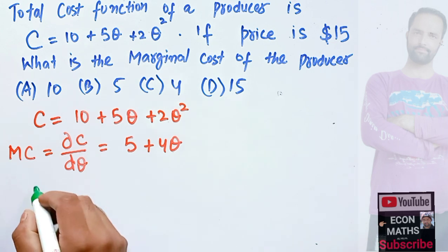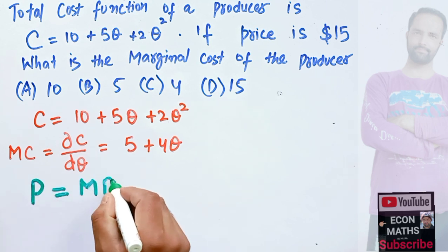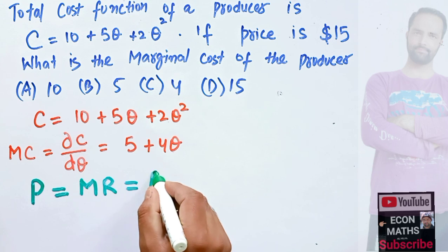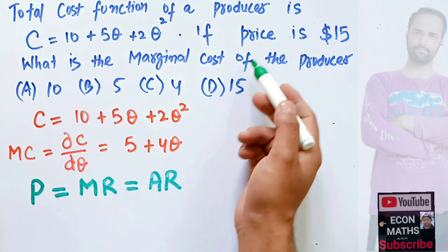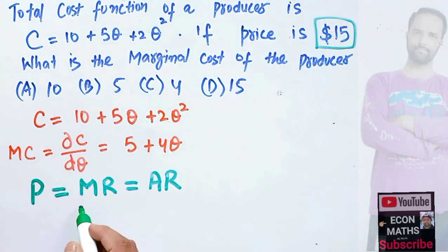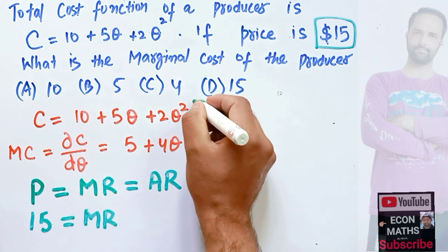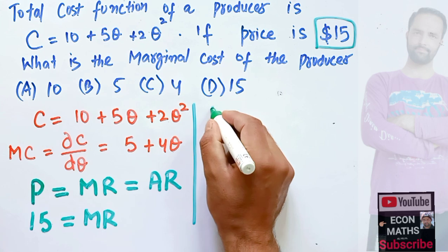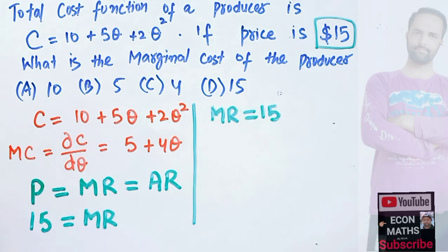We also know that in perfect competition, price equals marginal revenue, which is also equal to average revenue. Since price is given as $15, we can write that marginal revenue equals 15.